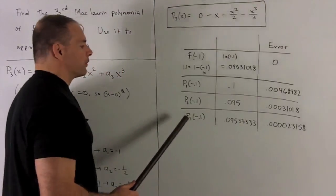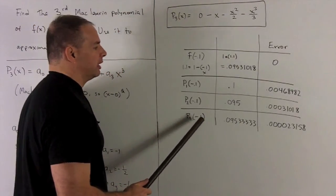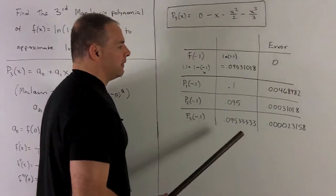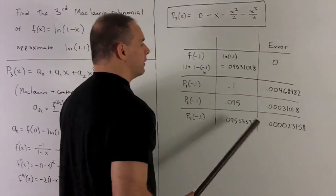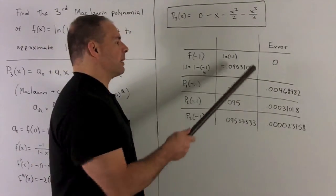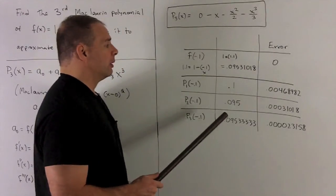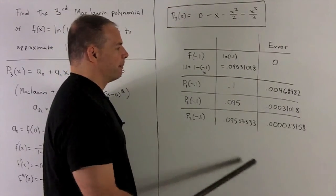And then if I just go for the whole thing with the cubic, put our minus 0.1 in, it's going to be 0.095 and then repeating threes. And there, our error gets us out to the fifth decimal place. So we see, as I keep adding more and more terms on to our polynomial, our approximation gets better and better.